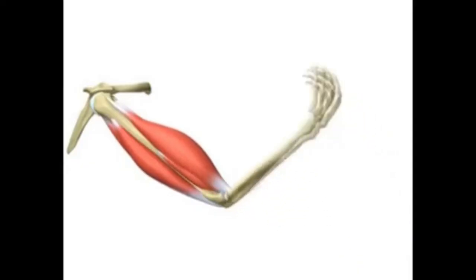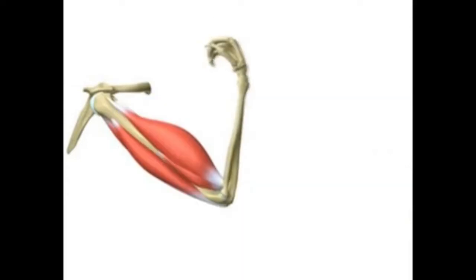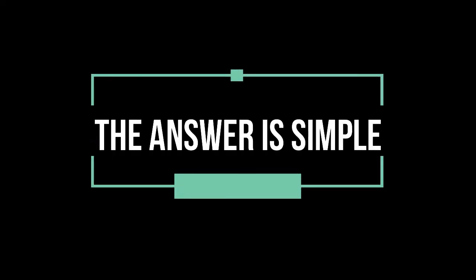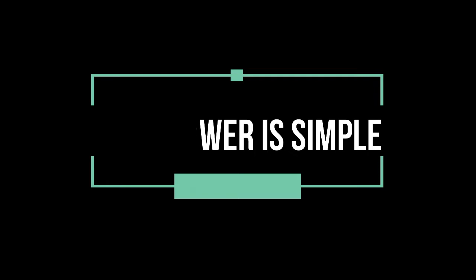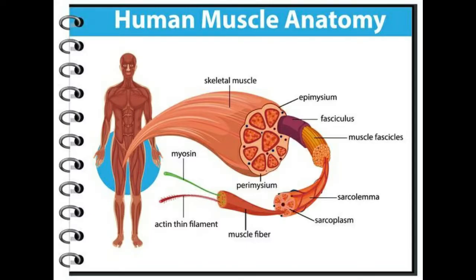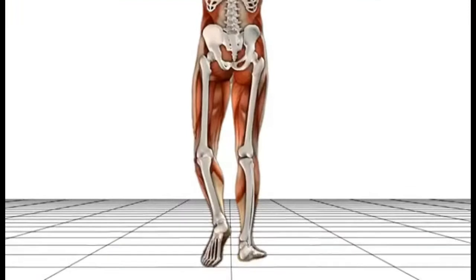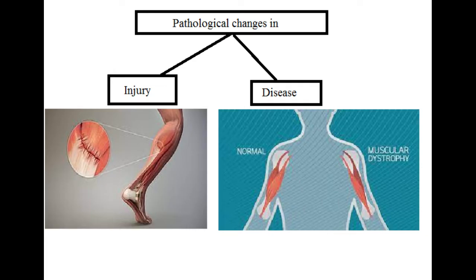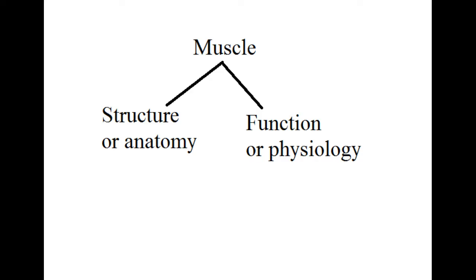Before we start, let's understand why you should study muscle anatomy and physiology. Well, the answer is simple. If you understand the normal structure and function of a muscle, it'll be easy to understand its pathological changes. Pathological changes are usually seen after an injury or disease. With that in mind, let's have a look at basic skeletal muscle anatomy and physiology.